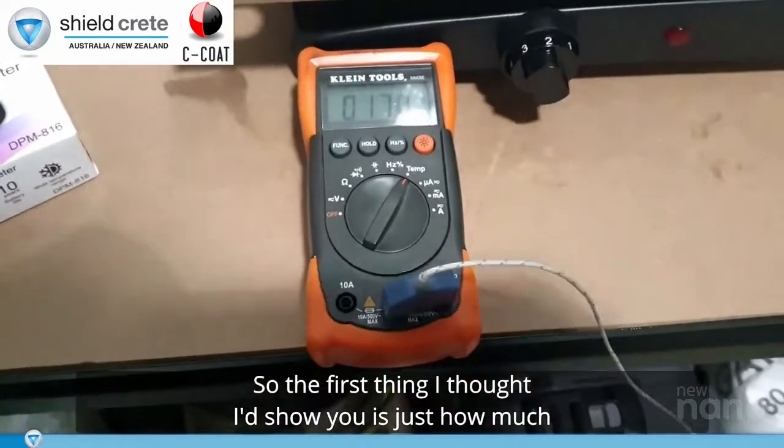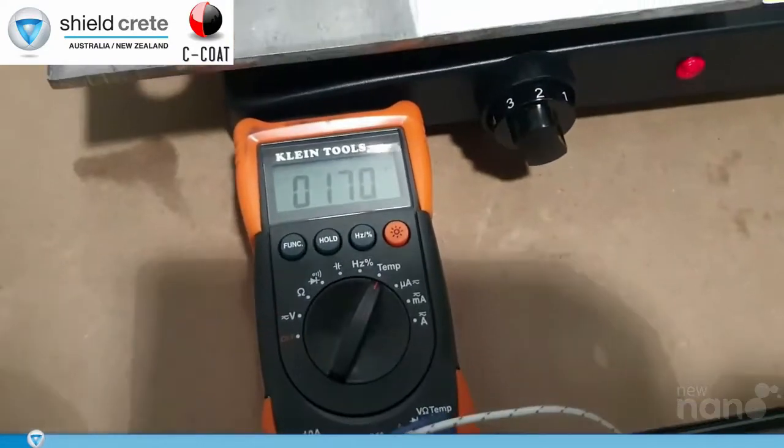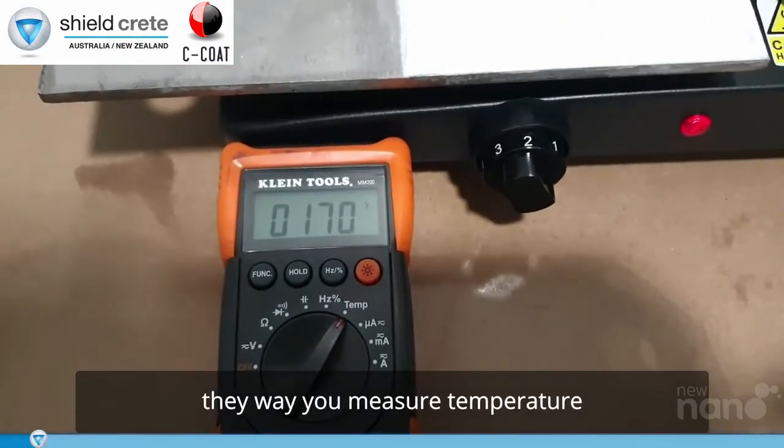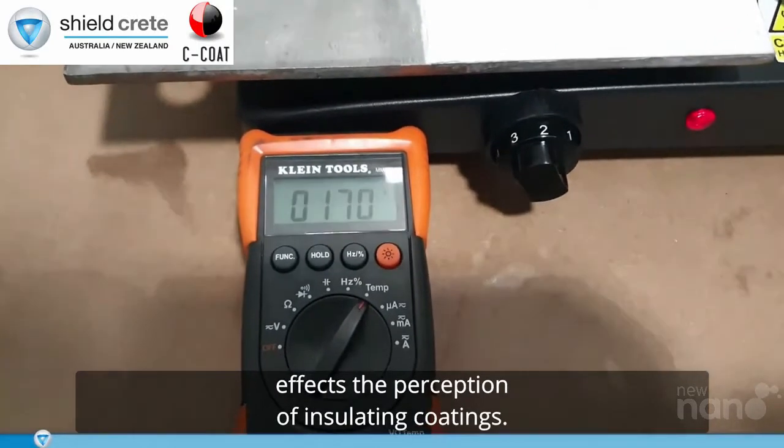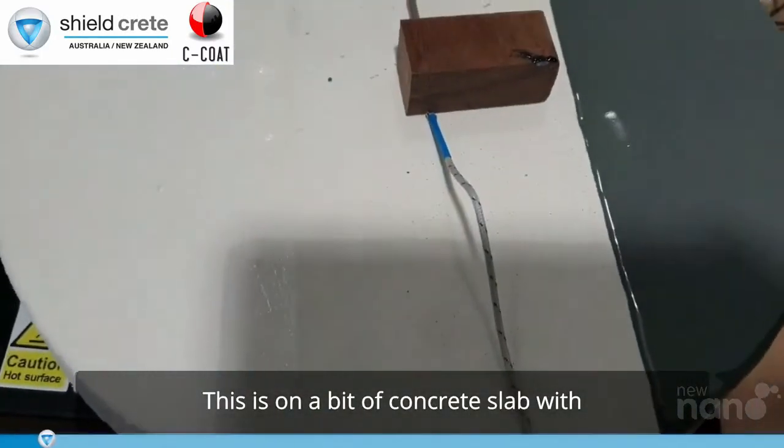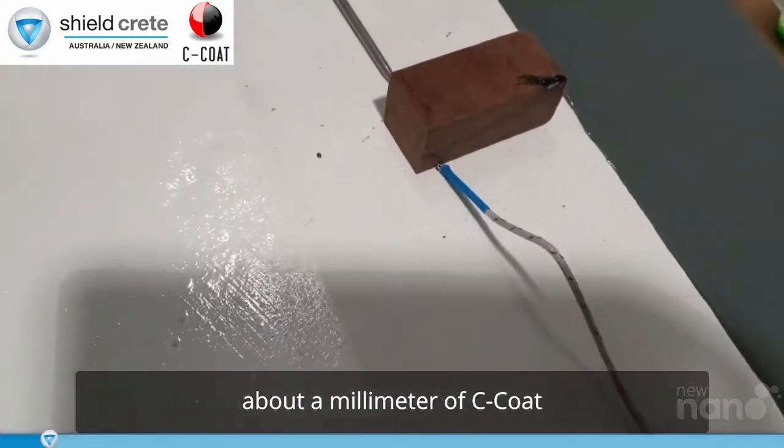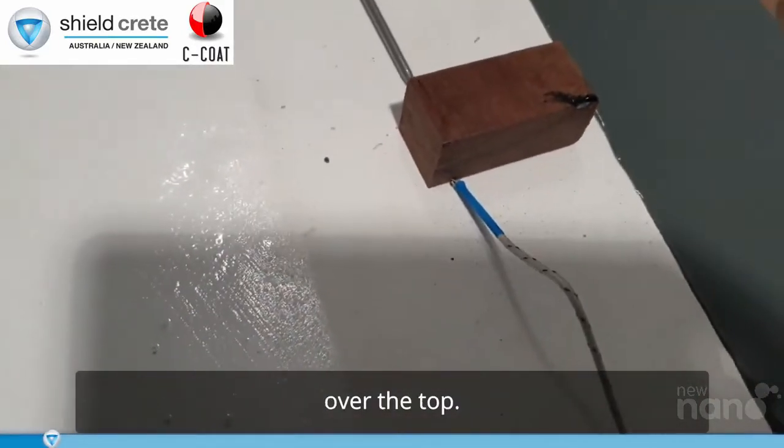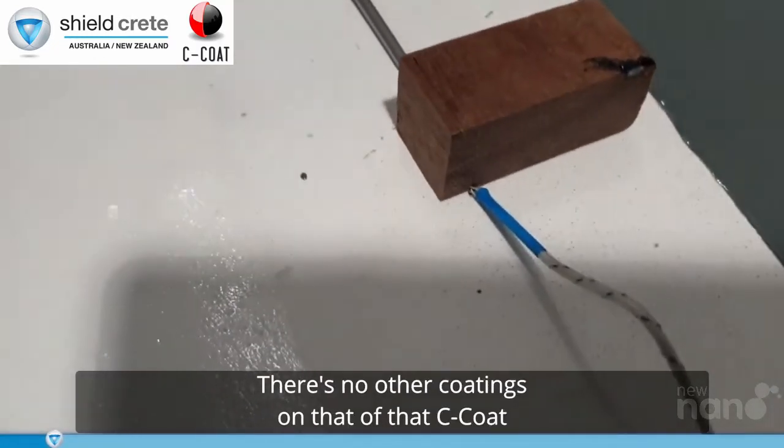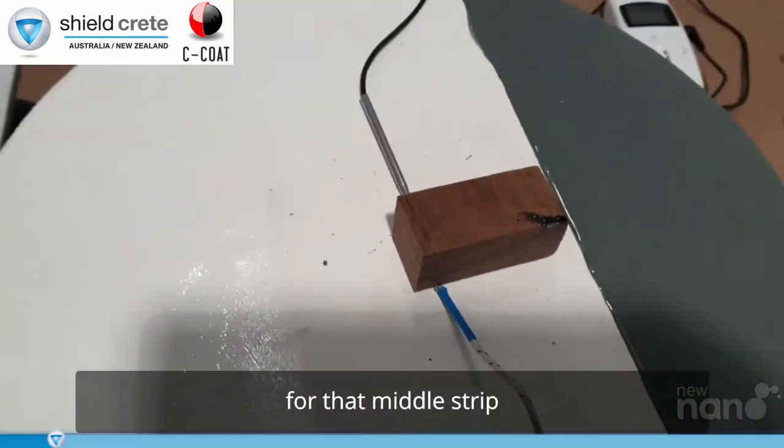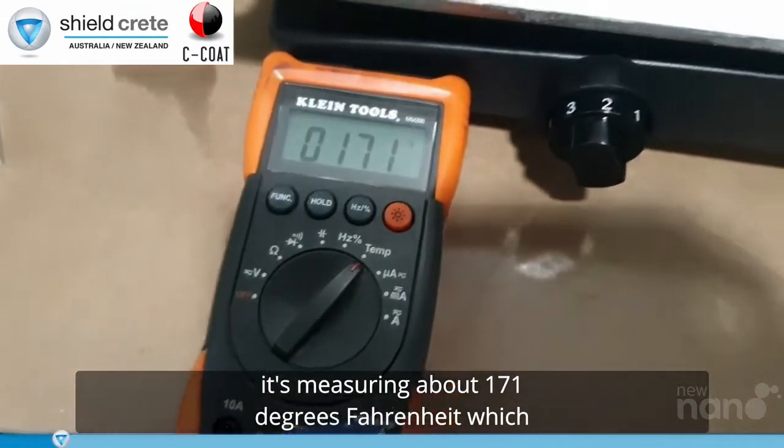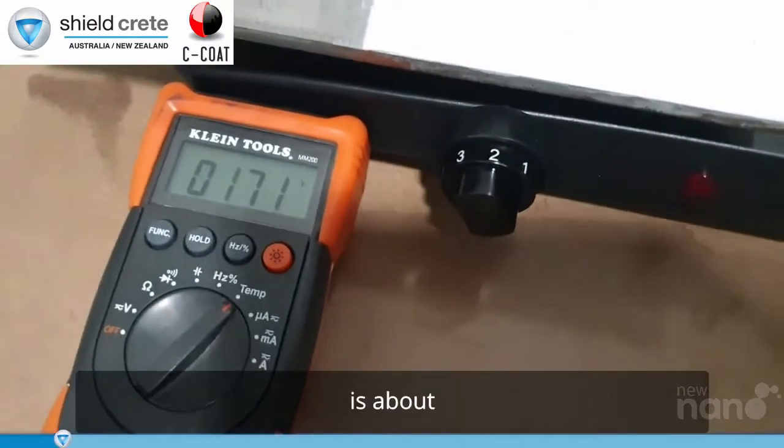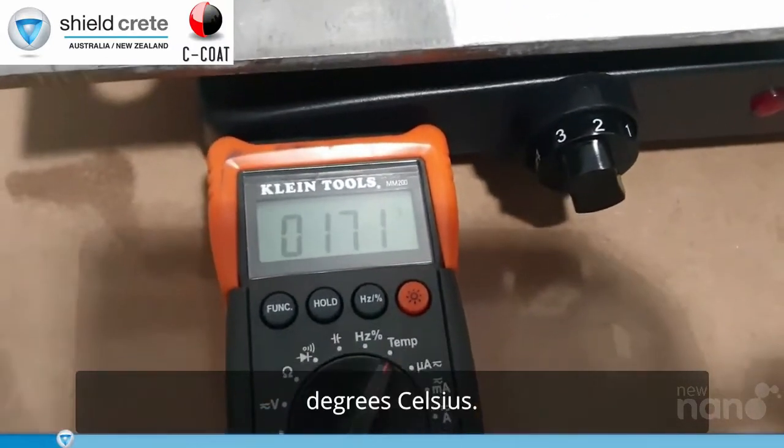So the first thing I thought I'd show you is just how much the way you measure temperature affects the perception of insulating coatings. So this here is in Fahrenheit. This is on a bit of concrete slab with about a millimeter of C-coat over the top. There's no other coatings over the top of the C-coat for that middle strip and it's measuring about 171 degrees Fahrenheit which is about 77 degrees Celsius.